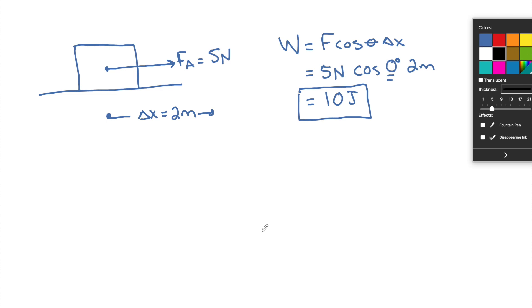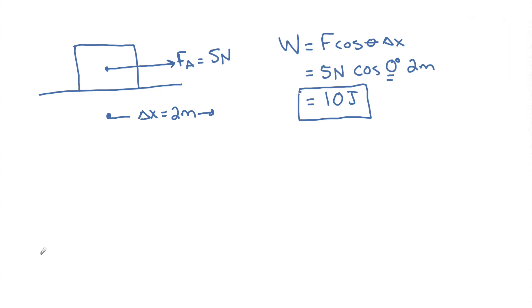But now if I have the exact same force on the exact same box, but now let's say that applied force FA 5 newtons is now at a theta equal to 60 degrees. Even if I move the same distance delta X equal to 2 meters, let's see how the work now changes. Work is going to be equal to F cosine theta delta X.